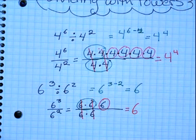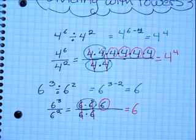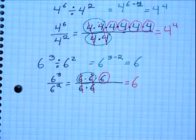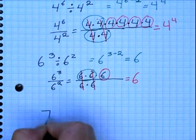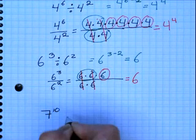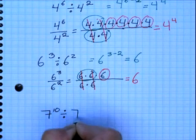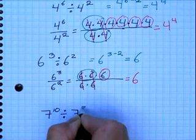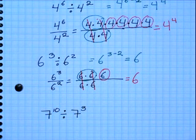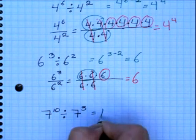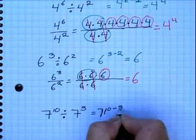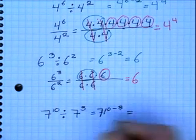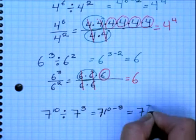Here's an example for you to try on your own. Press pause, work out the solution, and then press play and see if you got it right. 7 to the 10th power divided by 7 to the 3rd power. Using the shortcut, we would say 7 to the 10th power minus 7 to the 3rd power, which equals 7 to the 7th power.